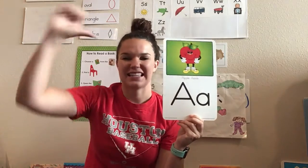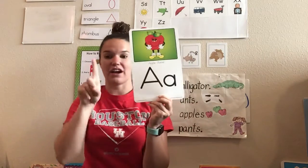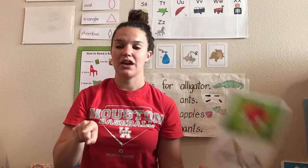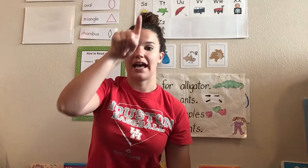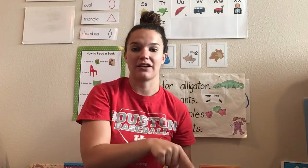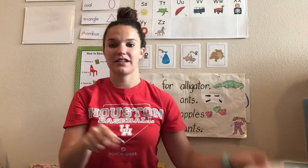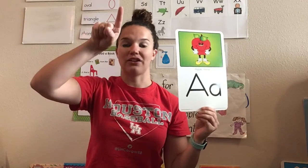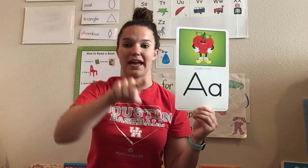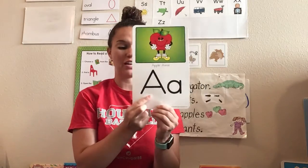A says ah, ah, ah. Let's get our finger. I want you to hold out your finger and we're going to trace the letter A. Ready? We're going to go diagonal up, diagonal down, across. Just like this. Ready? Diagonal up, diagonal down, across. Very good.